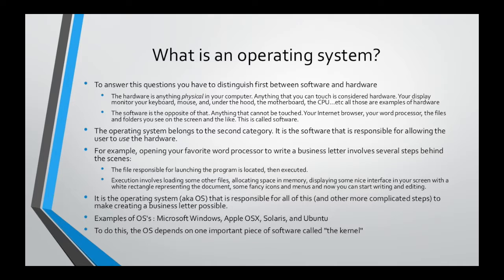In order to launch a word processing program like Microsoft Word on Windows and start writing a business letter, this might seem like a simple process, but behind the scenes it's much more complex than just double-clicking an icon. It involves the operating system locating the file, launching the code inside it, allocating memory for the process, interacting with the hard disk and monitor, and gaining input from the keyboard as you edit the document. All of this is done through the operating system behind the scenes.